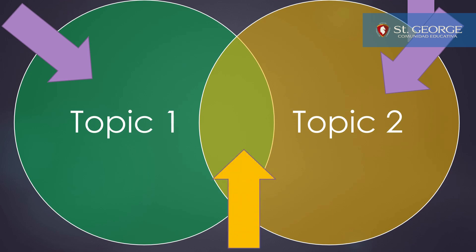In the middle section, which is where the two circles meet, you have to write down the similarities existing between the concepts, the things that they have in common.